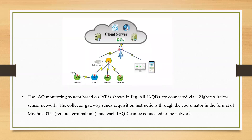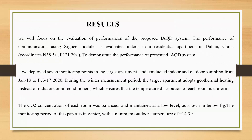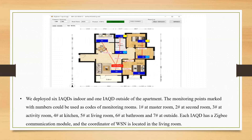The indoor air quality monitoring system based on IoT is shown in the figure. All indoor air quality detectors are connected with ZigBee wireless sensor networks. The collector gateway sends instructions through the coordinator in the format of Modbus, and the RTU (Remote Terminal Unit) can be connected to the network. We developed six indoor air quality detectors inside and outside of the apartment. The monitoring points are coded by number: the first is the master room, second is the second room, third is the activity room, fourth is the kitchen, fifth is the living room, and sixth is outside. Each indoor air quality detector has a ZigBee communication module, and the coordinator of the wireless sensor network is located in the living room.